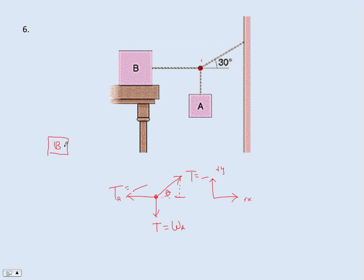Then draw a free body diagram of block B to figure out what's happening with friction. B has weight — I think they give the weight — along with T-horizontal, a normal force, and the force of static friction. It's just about to slip, so we want to know when it's just about to go. Static friction less than or equal to mu times normal, but just before it slips, it equals that. Sum the forces in x and y for each free body diagram to solve the problem. It's a lot of work — give yourself a lot of space — but you can do it.